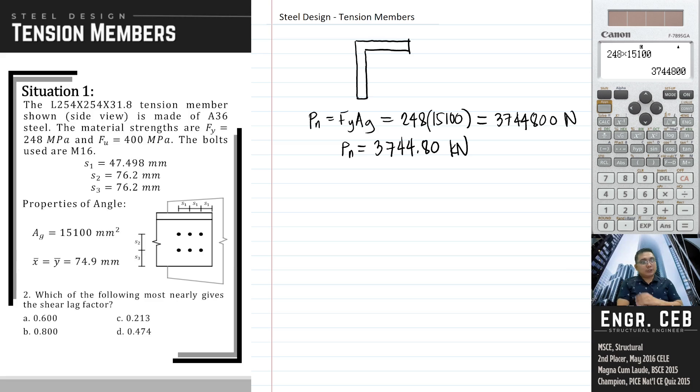Next problem. Which of the following most nearly gives the shear lag factor? We use shear lag factor to account for the phenomenon wherein the stress being transferred to the member is not uniform because not all of the elements of the cross section are connected. Only one leg is connected to another member. If that is the case, you have to apply the shear lag factor.